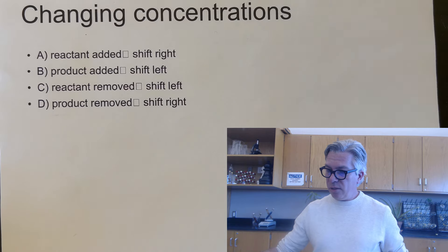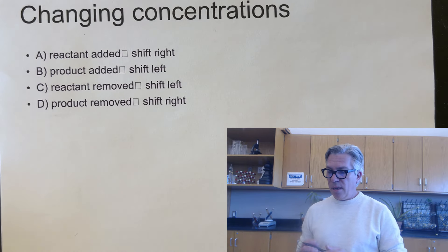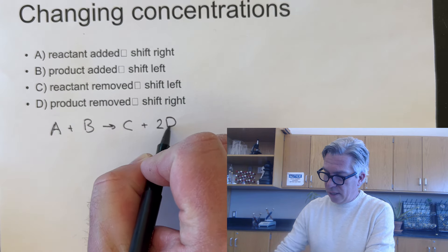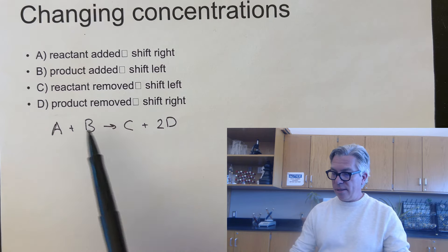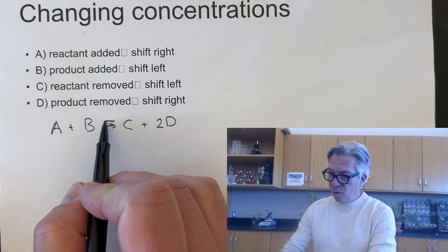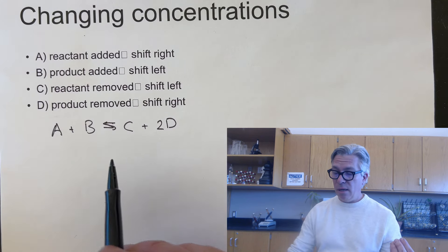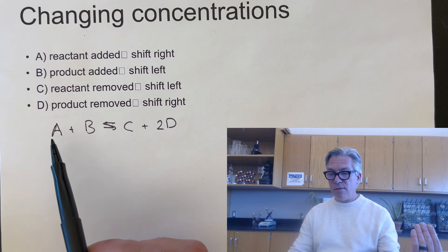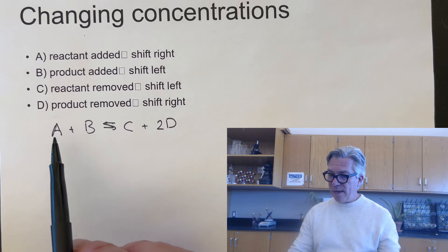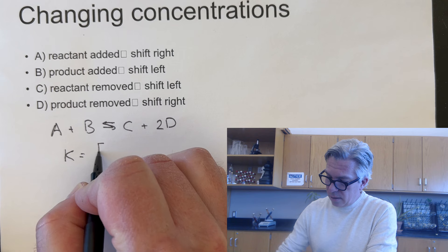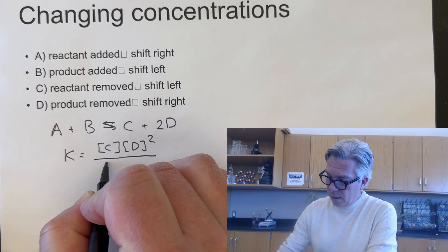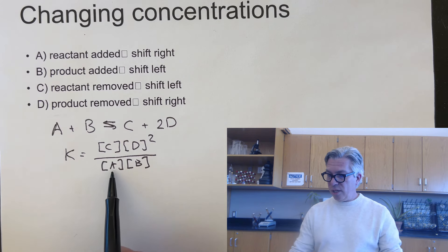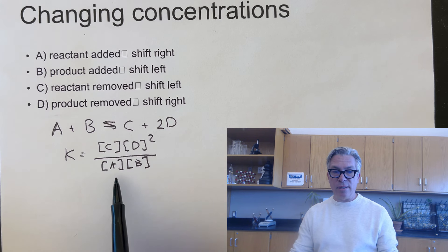When you have a system at equilibrium — say A + B ⇌ C + 2D — you can affect the equilibrium by adding more of any species or by extracting something from it. The equilibrium wants to undo what you did and get back to balance. If you add reactant A, that concentration immediately gets bigger and the ratio of products over reactants gets smaller than K. So the reaction quotient Q is too low, and it shifts right to increase products and decrease reactants until it reaches equilibrium.